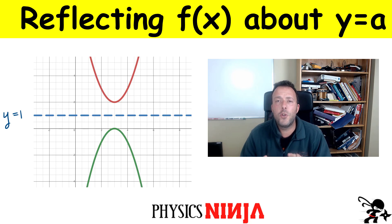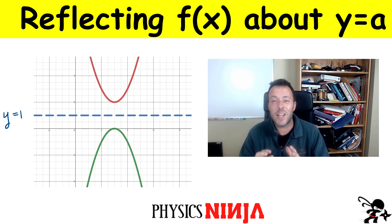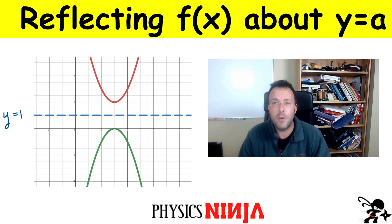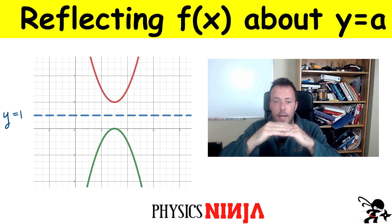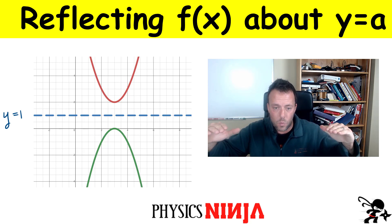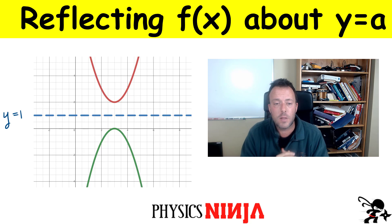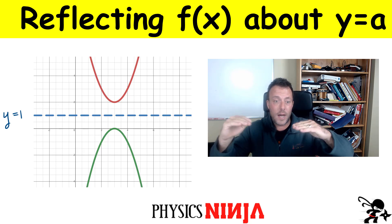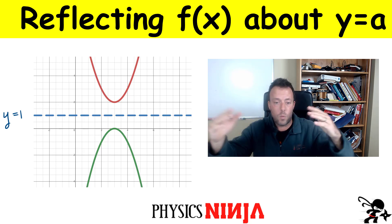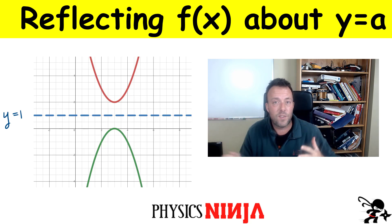Hi everybody. Today we're going to look at how you can reflect any function about an axis other than the y equals zero line. You may have learned in class how to do it about y equals zero, but how would you do it if you wanted to reflect any function about y equals one or y equals minus five?